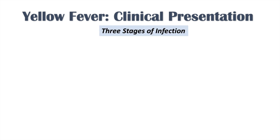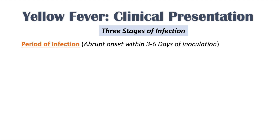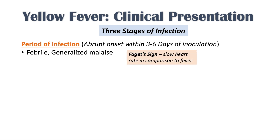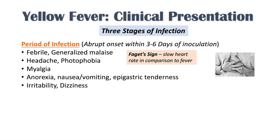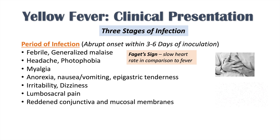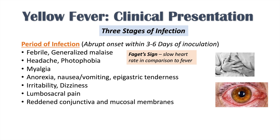There are three stages of yellow fever infection. The first stage is the period of infection — an abrupt onset of symptoms within the first three to six days of inoculation. The person becomes febrile with generalized malaise. The fever is associated with Faget's sign, which is a slow heart rate relative to the fever. There's also headache, photophobia, myalgia, anorexia, nausea, vomiting, epigastric tenderness, irritability, dizziness, lumbosacral pain, and reddened conjunctiva and mucosal membranes.